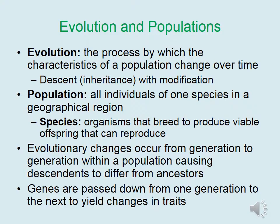Evolution is the process by which the characteristics of a population change over time. This is also known as descent or inheritance with modification. Genes are passed down from parents to offspring, giving offspring a slightly different set of genes and therefore traits than their parents had, such that a population changes over time. A population is defined as all individuals of one species in a geographical region.